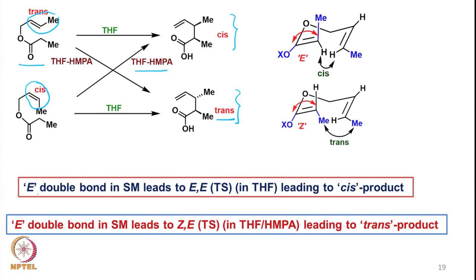To summarize: an E double bond in the starting material leads to an E,E transition state and leads to cis products. A Z double bond in starting material leads to a Z,E transition state. For example, if it is E and we use THF/HMPA we get Z here, and that leads to the trans product.